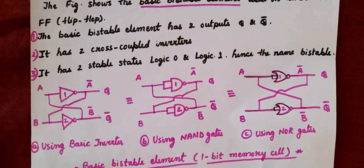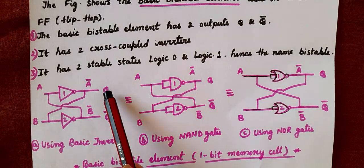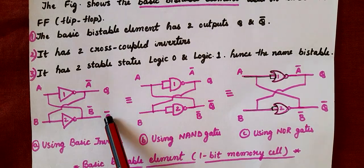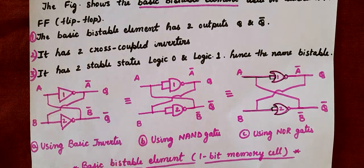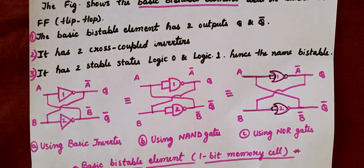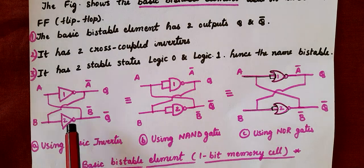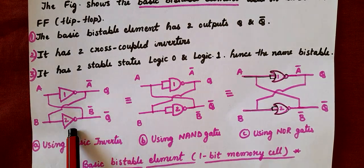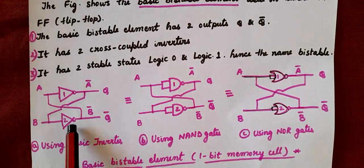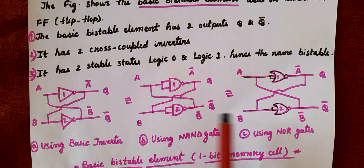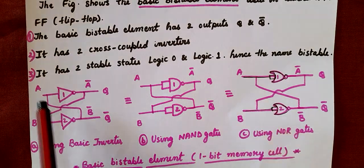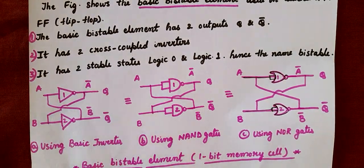Why is it known as a bistable element? Because it has two output states — Q and Q-bar — where one will definitely be at logic 0 and the other at logic 1. A latch is a cross-coupled inverter. You can draw a latch either using an inverter or a NOT gate using NAND or NOR. The inputs are A and B, and the outputs are Q and Q-bar.